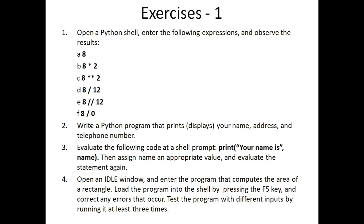Here are some exercises. First, open the Python shell and try these expressions: 8, 8*2, 8/2, and 8//12 — observe the results; these involve division and quotient operations. Second, write a program that displays your name, address, and telephone number. Third, evaluate 'print("Your name is", name)' at the shell prompt, assign name to an appropriate value, and evaluate it again. Fourth, open IDLE and write the script for the rectangle area program.